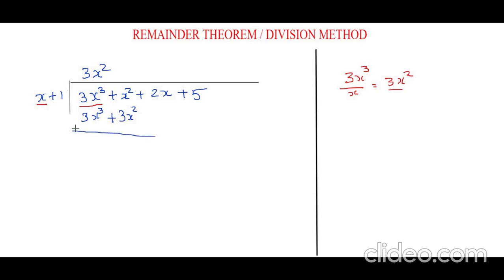The next step is to subtract. When we subtract two equations, we change the signs of the bottom equation. So 3x³ minus 3x³ would be crossed out because it becomes zero. Since there is no number before x², this will be 1x², so 1x² minus 3x² would be minus 2x².